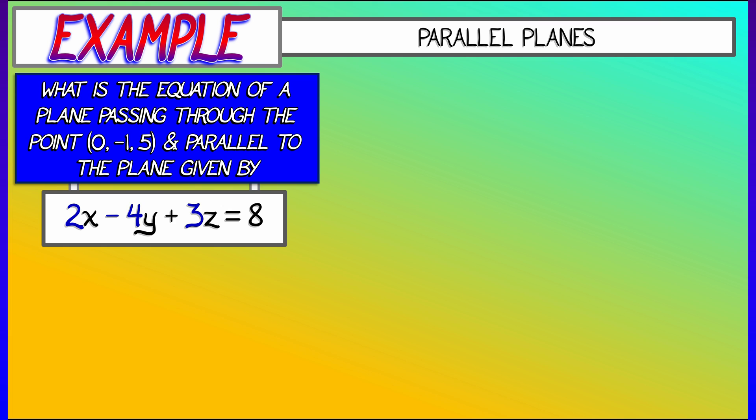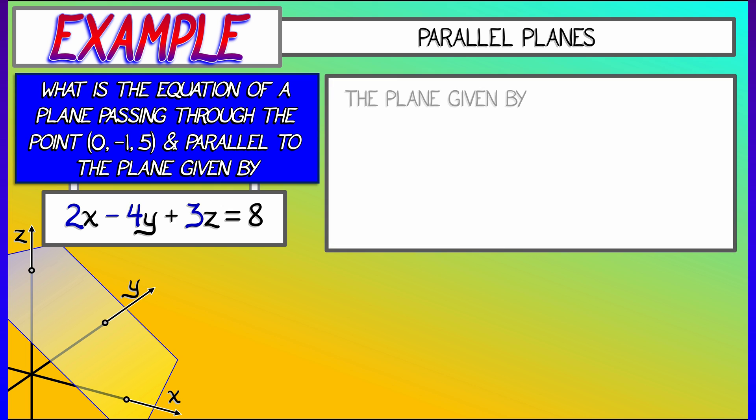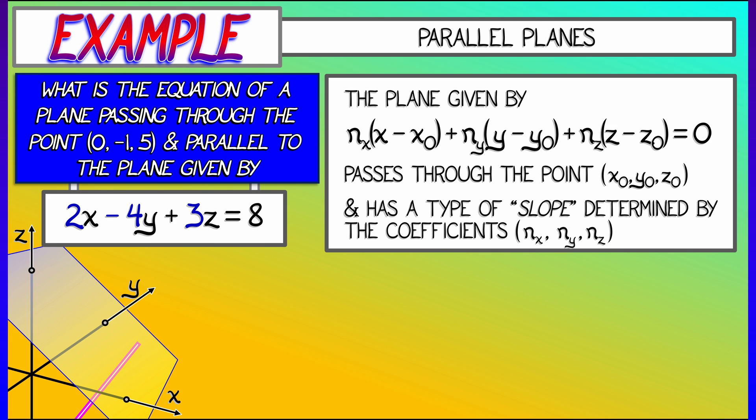So what do we need to do? Well, take a look at those coefficients: 2, -4, 3. That is your nx, ny, and nz. These are the things that encode the slope or directionality of that plane. So we're going to want to keep those the same. But now we want to pass through this new point, x-naught, y-naught, z-naught: 0, -1, 5.